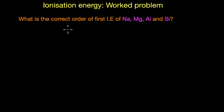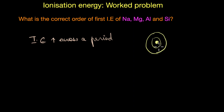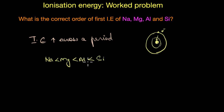The second question asks for the correct order of first ionization energy of sodium, magnesium, aluminium, and silicon. Ionization energy generally increases across a period because the number of protons in the nucleus increases, raising the nuclear charge and the pull on outer electrons. Based on this, the order might seem to be Na < Mg < Al < Si — but wait, this may not be entirely correct.